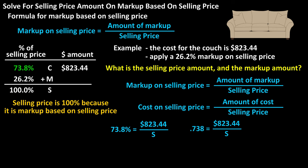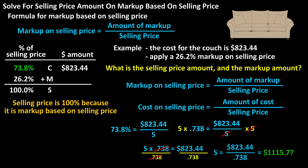We first convert 73.8% to a decimal and then solve for s, which I've done on the screen. And we get $1,115.77 as the selling price, which answers the first question. We can put that value in the table.